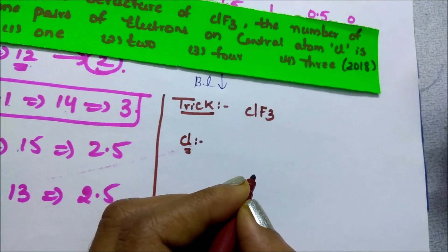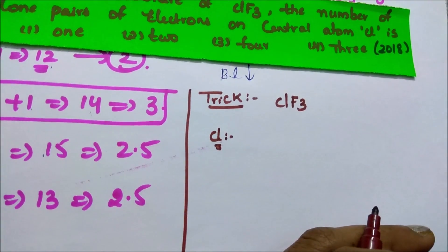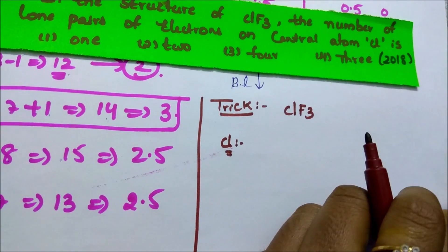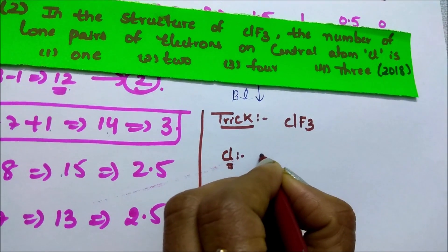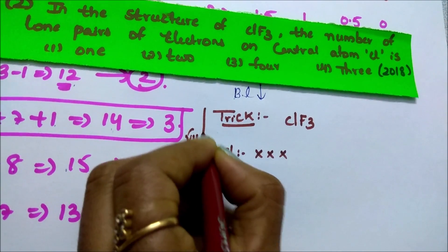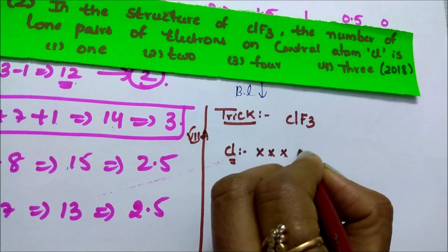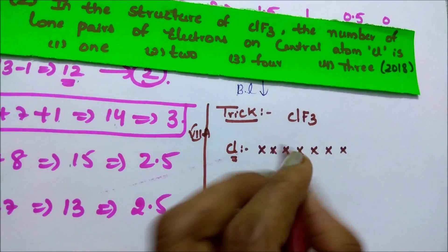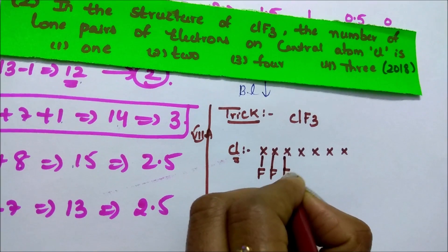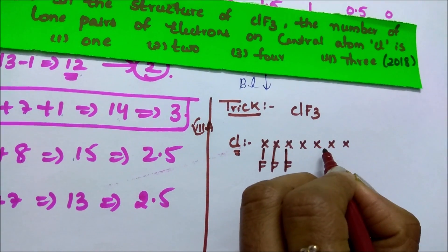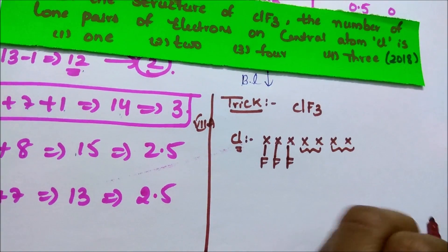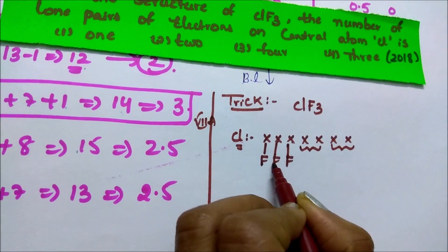Chlorine has 7 electrons in its valence shell. Each fluorine is monovalent, meaning it can share only 1 electron. There are 3 fluorines. Whatever electrons are left, every 2 electrons count as 1 lone pair. Count the total: bonds plus lone pairs gives 1, 2, 3, 4, 5.